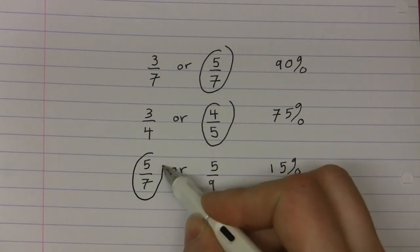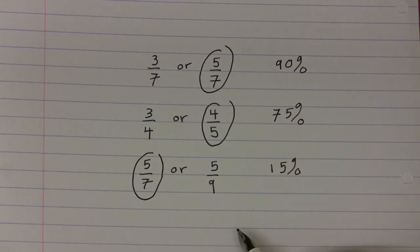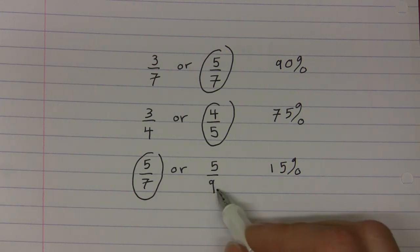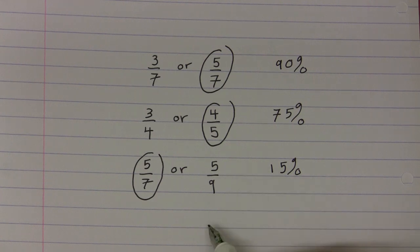5 sevenths is actually the greater fraction. This is what our achievement outcome states. Students need to understand the inverse relation between the denominator of a fraction and its value. In other words, if the denominator of a fraction increases, as it does here from 7 to 9, then the value of the fraction decreases. Again, time should be made in the new curriculum to really embed this idea and develop learners with deep conceptual understanding of fractions.